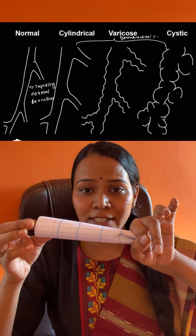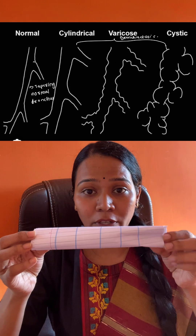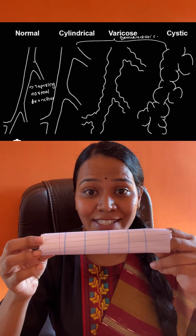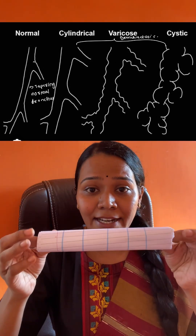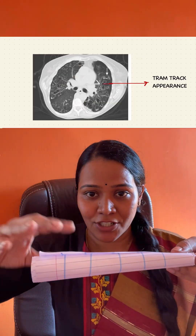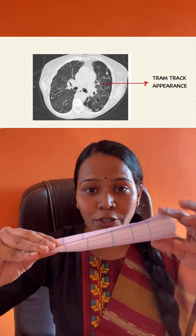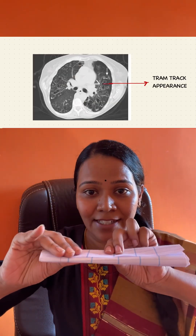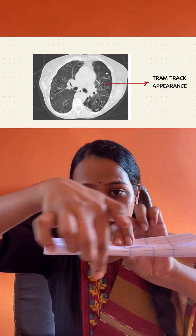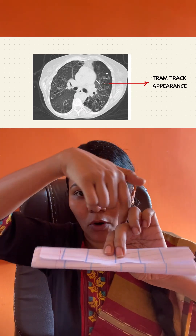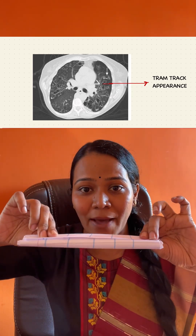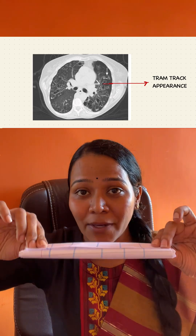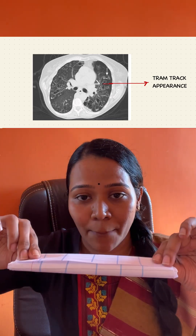Now in bronchiectasis, what is happening? There is destruction of the bronchial wall, so there is dilatation of the bronchus everywhere. Now imagine you are seeing this in a cut section — there are going to be parallel tracks. Here there is going to be one bronchial wall, and here another bronchial wall, which are like parallel tracks. So that is nothing but your tram track appearance.